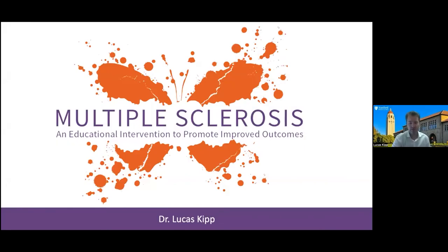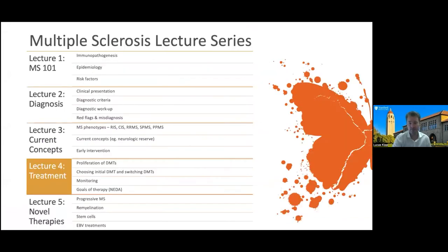Hello, everyone, and welcome back to our multiple sclerosis continuing medical education series. My name is Lucas Kipp. I'm a clinical assistant professor and MS specialist here at the Stanford MS Clinic in Palo Alto. In our last lecture, we explored the different phases and phenotypes of MS, the concept of neurologic reserve, and the importance of early treatment. Today, we'll be discussing MS therapies, emphasizing the use of high-efficacy therapies in the disease course, as well as concepts in monitoring MS and our goals of treatment.